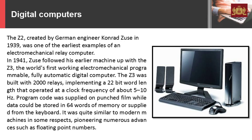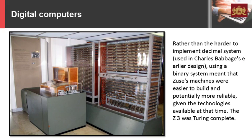In 1941, Zuse followed his earlier machine up with the Z3, the world's first working electromechanical programmable, fully automatic digital computer. The Z3 was built with 2,000 relays, implementing a 22-bit word length that operated at a clock frequency of about 5 to 10 Hz. Program code was supplied on punched film while data could be stored in 64 words of memory or supplied from the keyboard. It pioneered numerous advances such as floating point numbers. Rather than the harder to implement decimal system used in Charles Babbage's earlier design, using a binary system meant that Zuse's machines were easier to build and potentially more reliable. The Z3 was Turing complete.